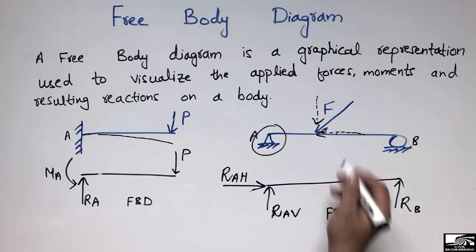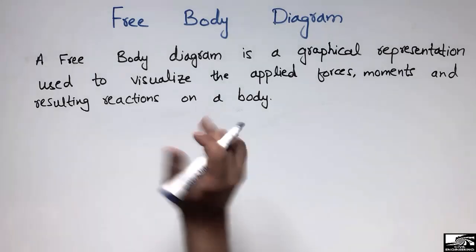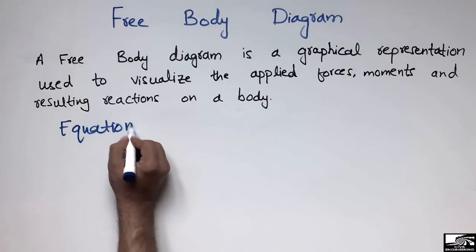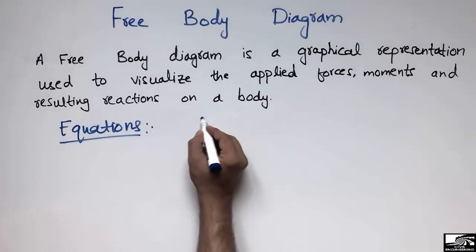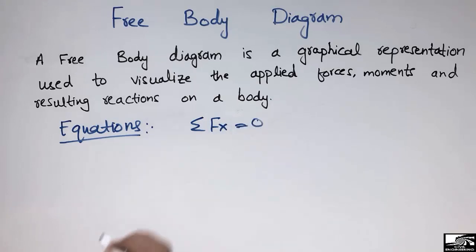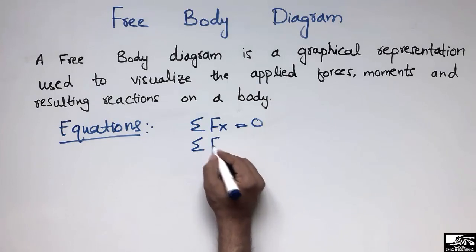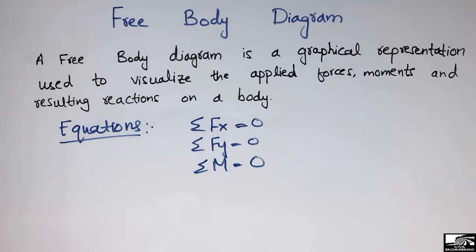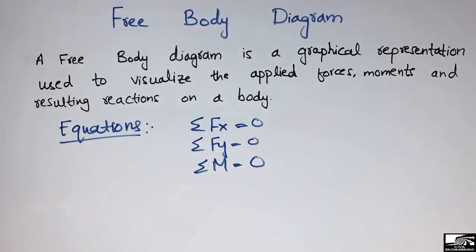Now you should note some important things about the free body diagram — these are the equilibrium conditions. You must remember: the summation of horizontal forces equals zero, the summation of vertical forces equals zero, and the summation of moments equals zero. These three equations are used to establish equilibrium when drawing any free body diagram for a beam.